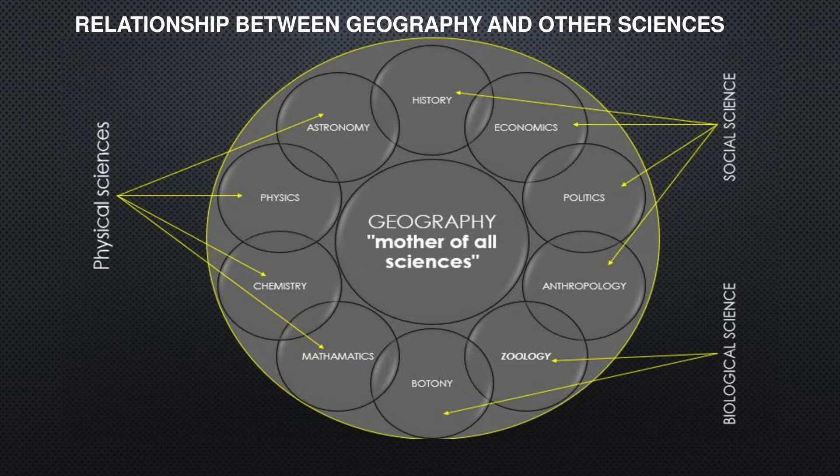Now let us see the relationship between geography and other sciences. Since geography discusses the relationship between man and his surroundings, geography has a close relationship to many sciences. Geography with physics: physics is used to learn about the temperature of the earth, air pressure, winds, rainfall, storms, sunlight, humidity, etc. The two sciences are closely related.